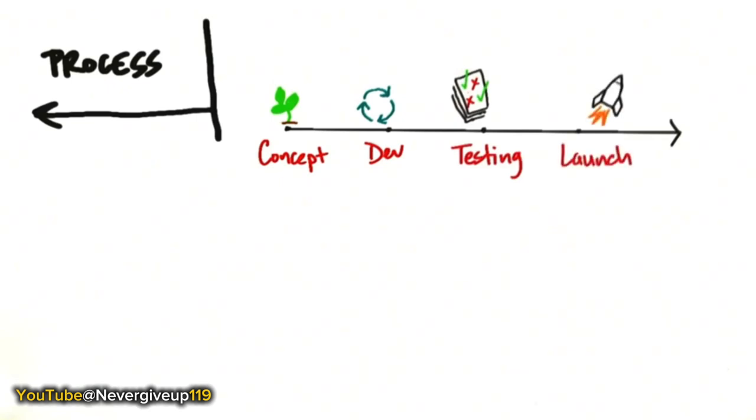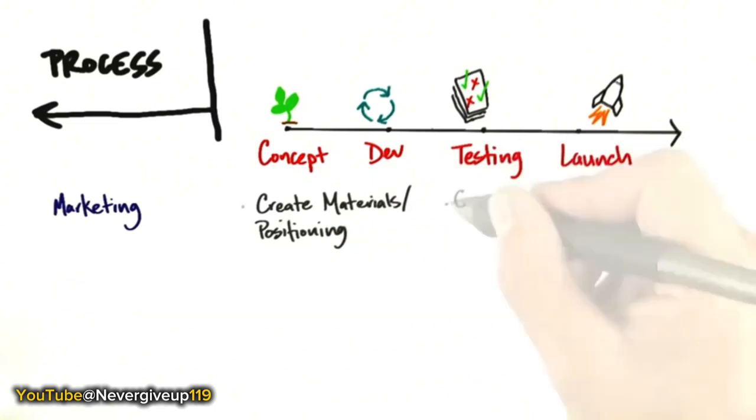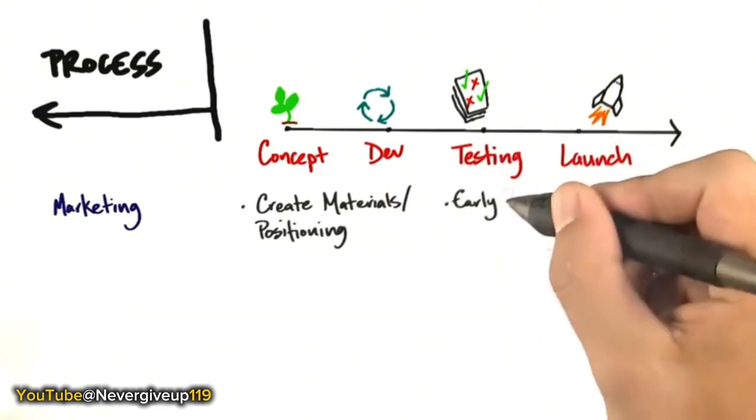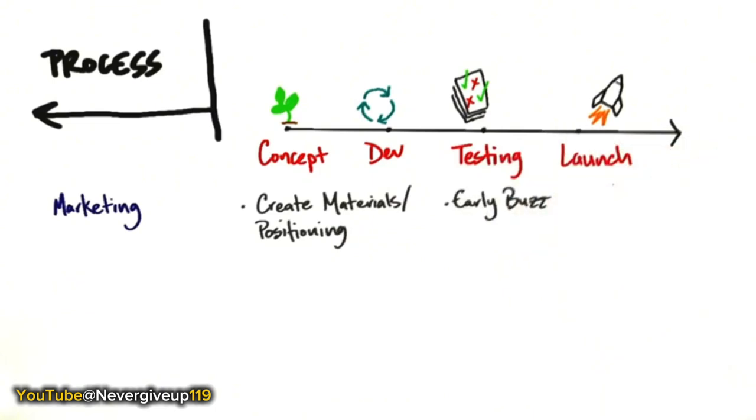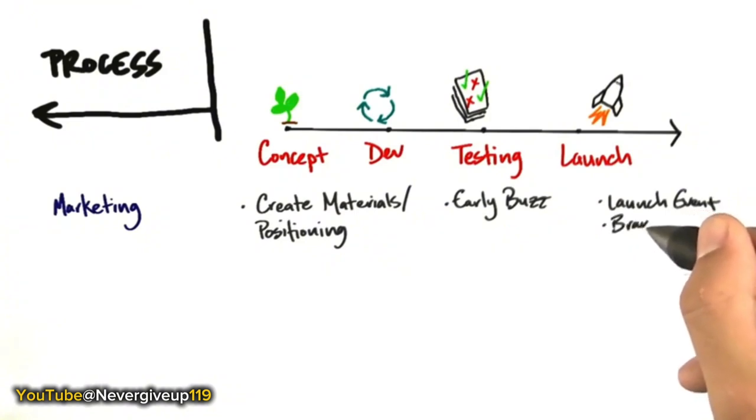For 30 or 40 years, this was the canonical model for how to build startups. And we'd say marketing, well, we understand. Engineering is developing the product. Marketing is creating all the marketing communications material, hiring a PR agency, creating early buzz, and the world's most fun job was to have the party. You get to create demand by having a launch event, think about branding. Your job really was to create end-user demand and drive it into the potential sales channel.